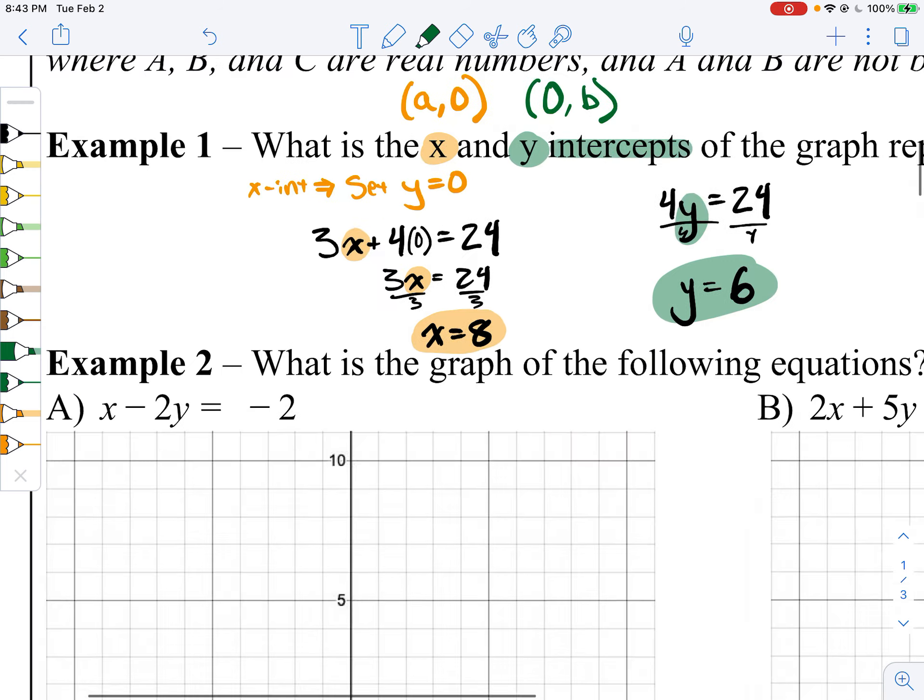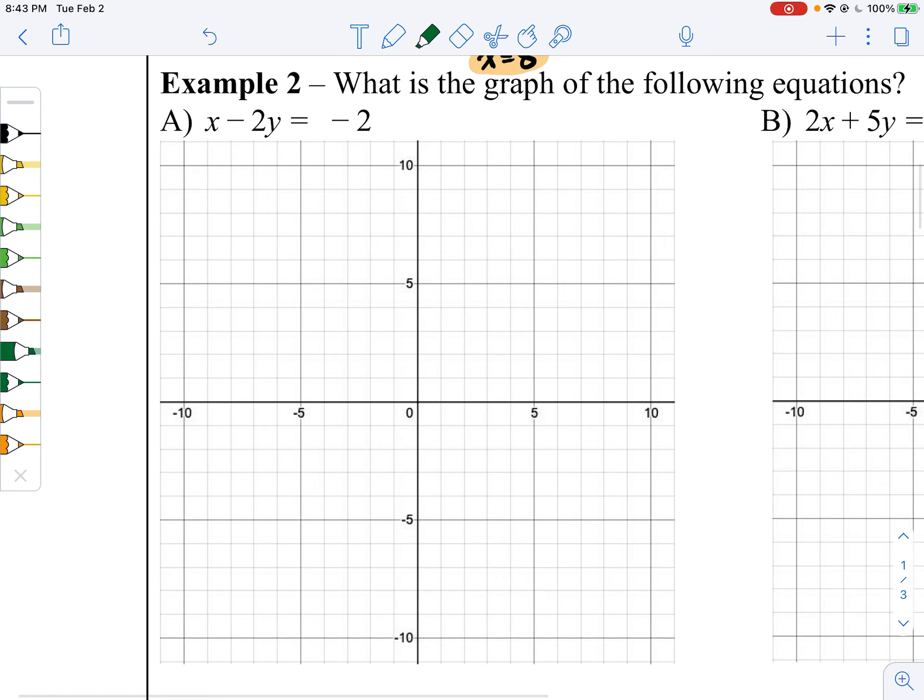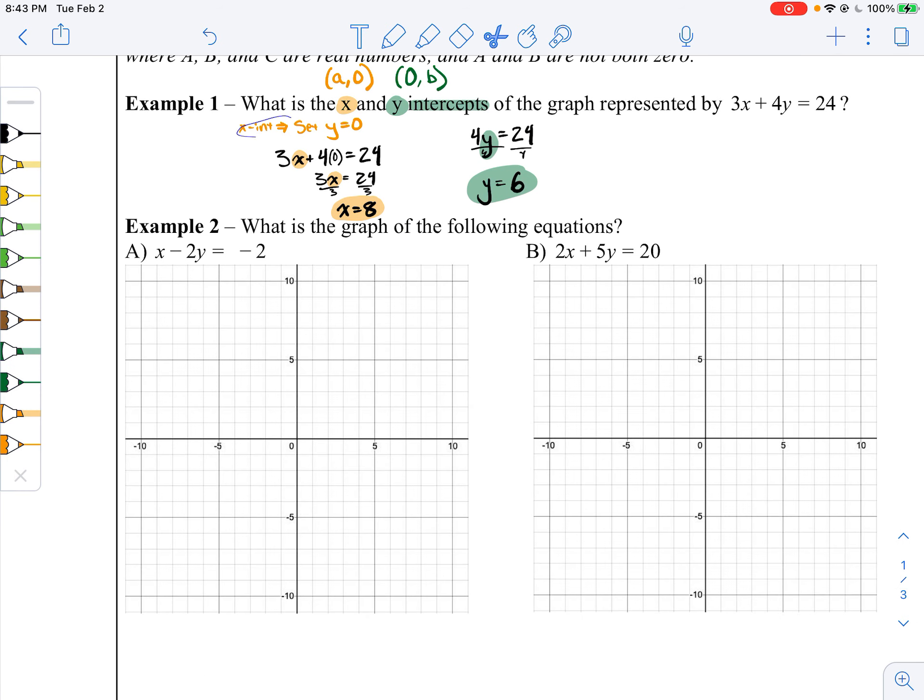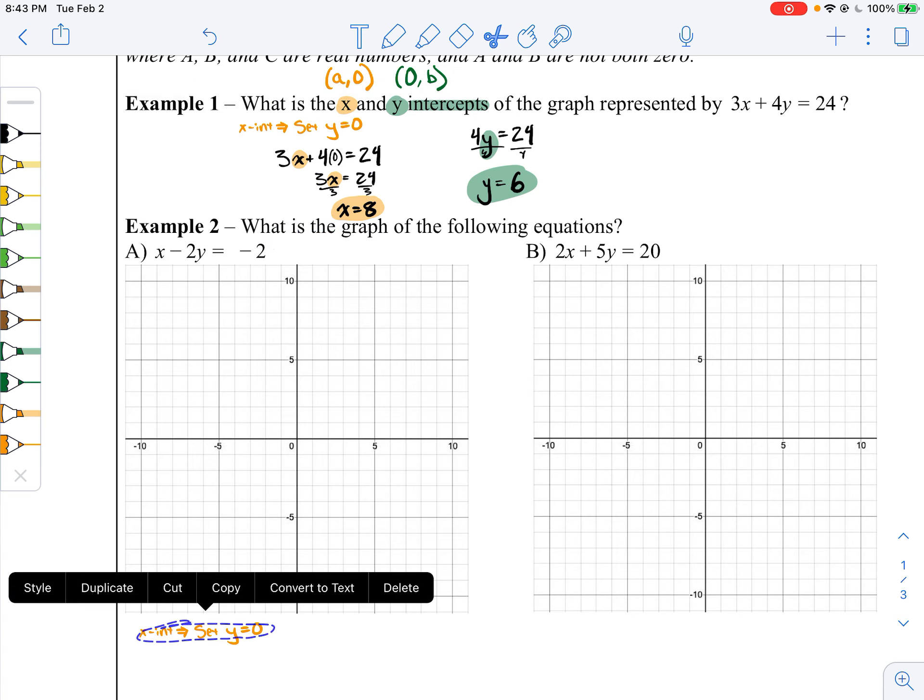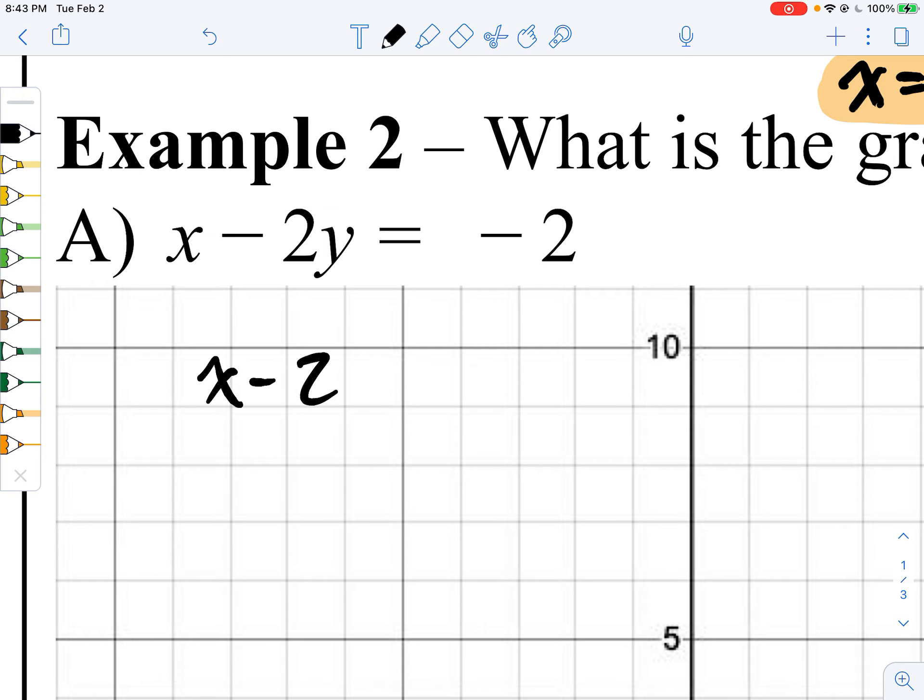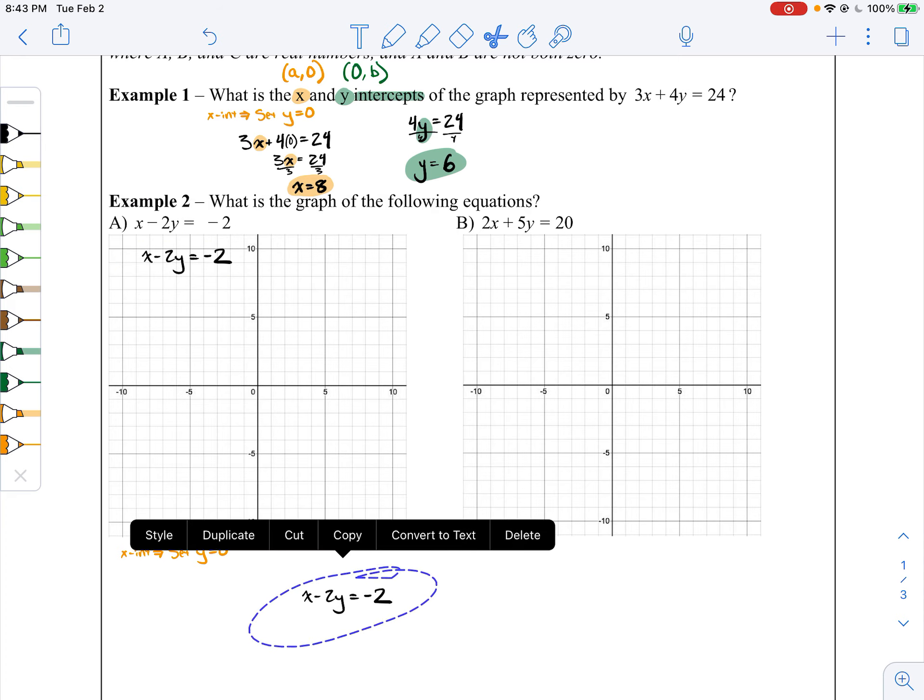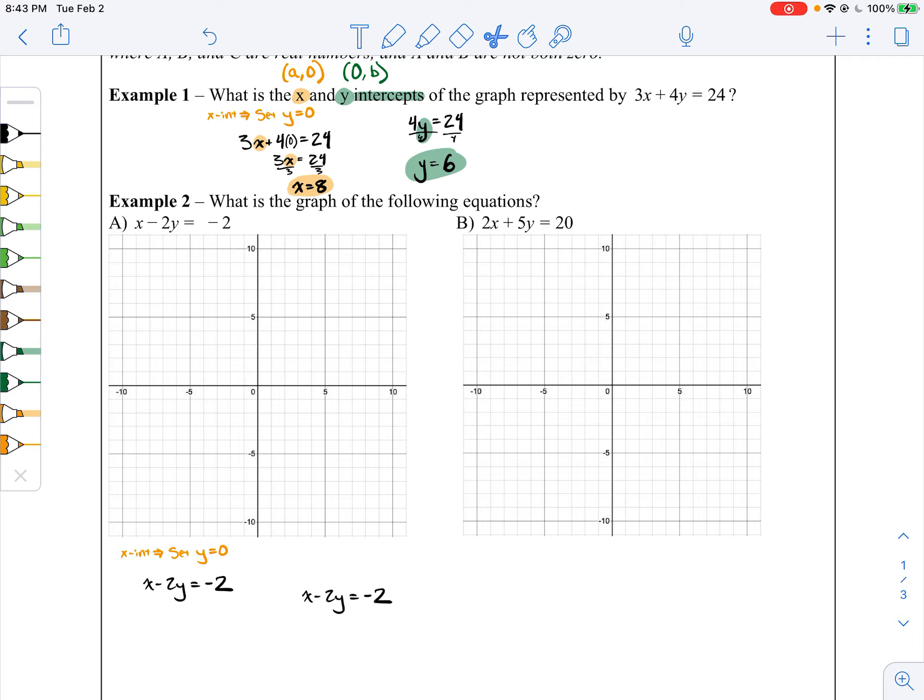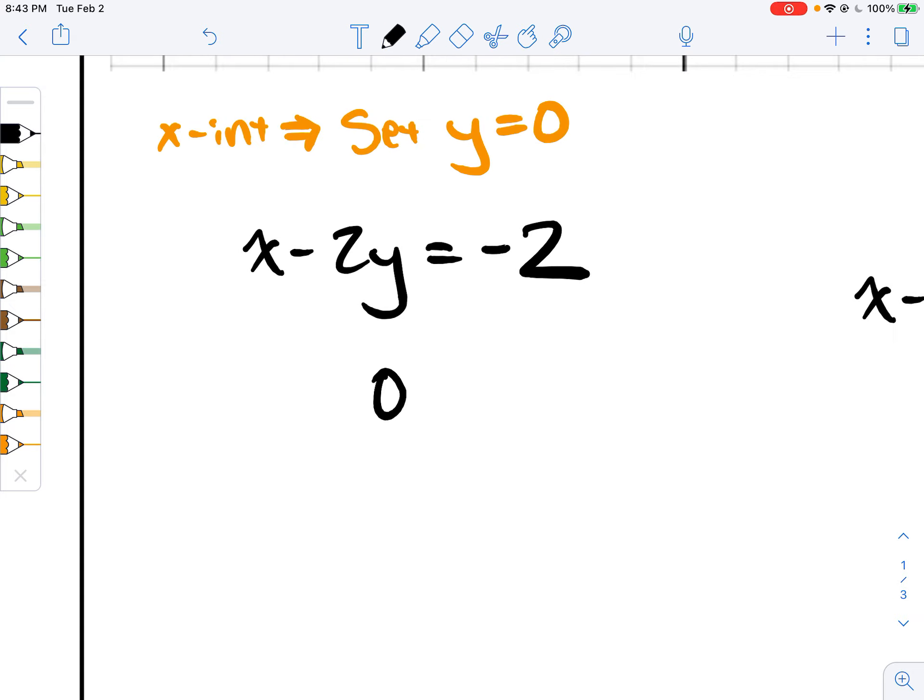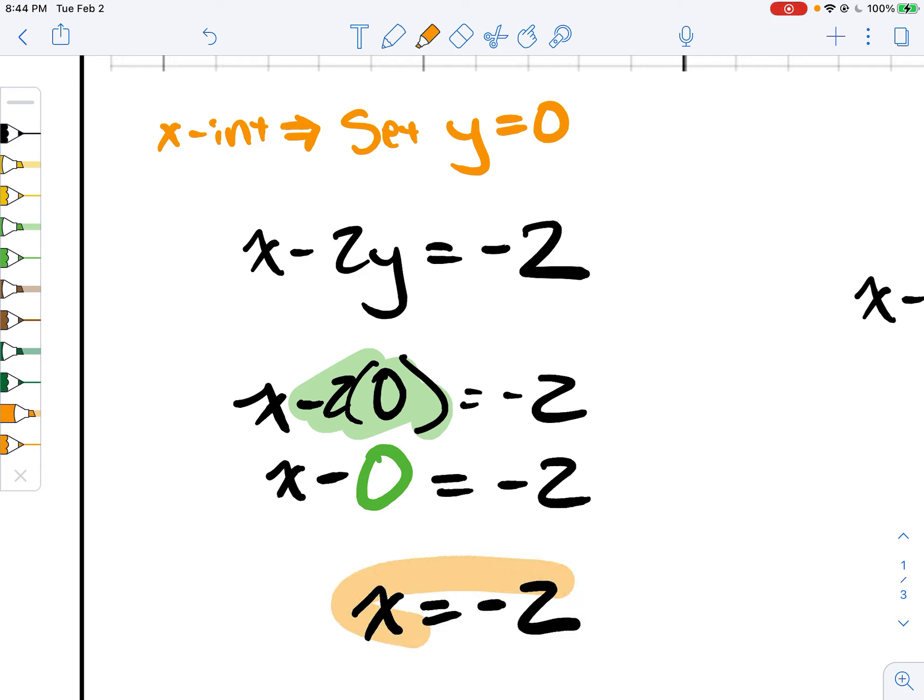Now, let's show this on the graph. This comes in handy because we just want to find what the intercepts are. To find the x-intercept, we're going to set y equal to 0. So let's take this equation, x minus 2y equals negative 2. To find the x-intercept, we set y equal to 0. So x minus 2 times 0 is negative 2. You don't need that 0. So x equals negative 2. Our x-intercept is at negative 2.